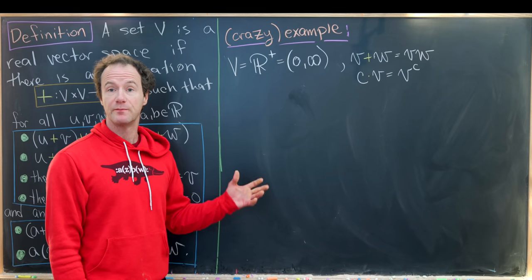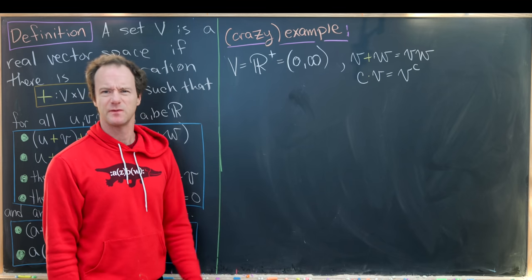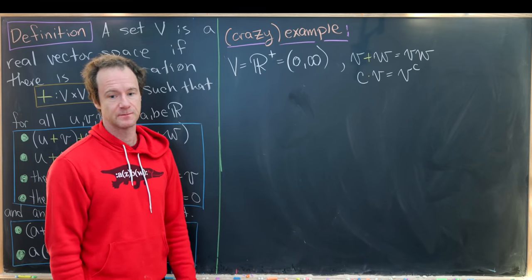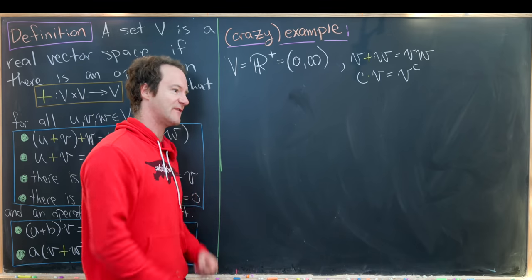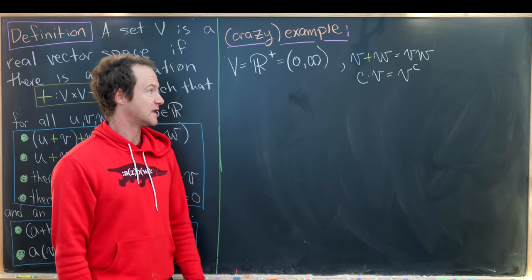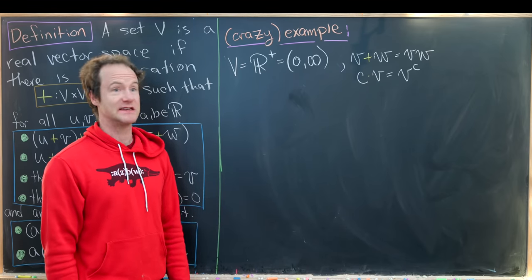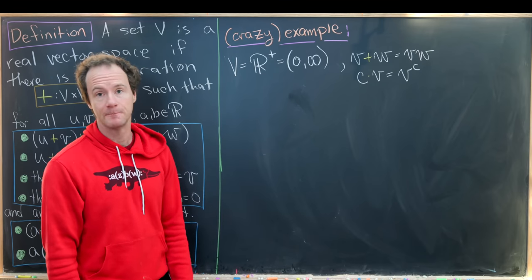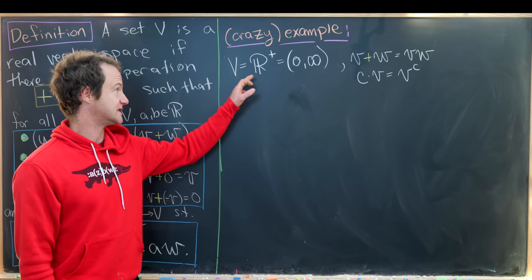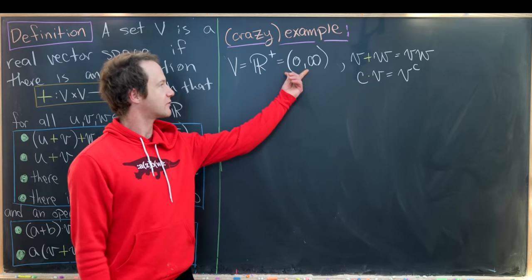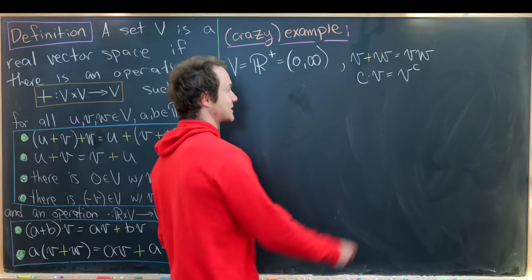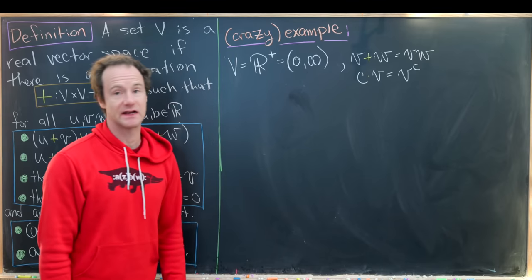So now let's look at our crazy example. You might say, why do we want a crazy example if it's not used in applications? Well, I think it's interesting to push the definition as far as possible — you'll learn about the limitations of the definition as well as really understanding everything it implies and does not imply. So let's set V, the would-be vector space, equal to the positive real numbers — the interval from zero to infinity. Our vector addition and scalar multiplication are defined as follows.